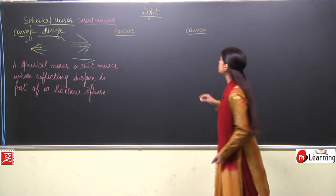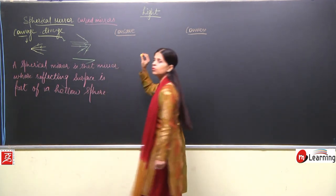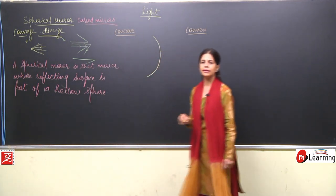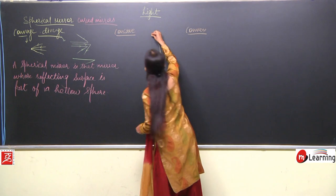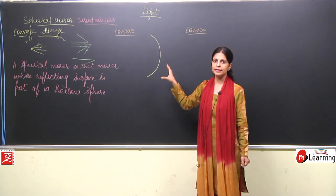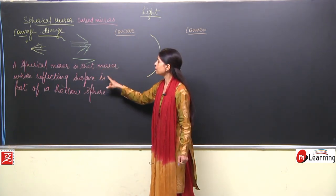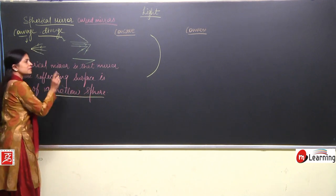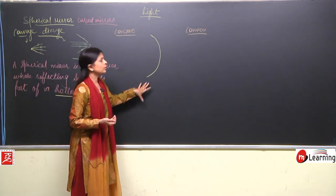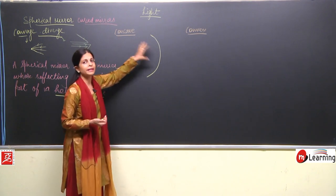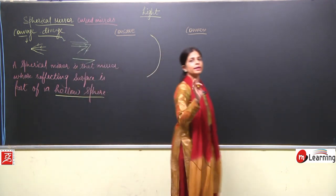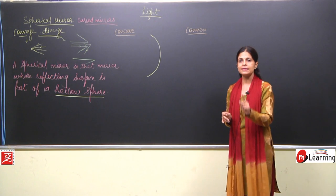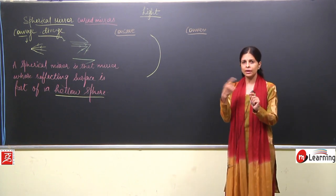Now we will talk more about these two mirrors. When I talk about a concave mirror, I have drawn just a part of a sphere. A spherical mirror is that mirror whose reflecting surface is part of a hollow sphere. This mirror is a part of a hollow sphere. Now I have drawn this curved surface — till now it does not fall under any category, neither concave nor convex.